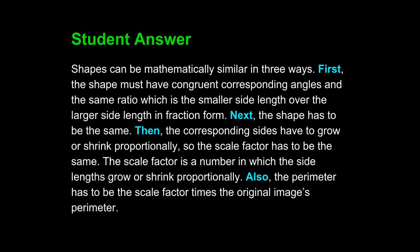Next, the shape has to be the same. Then, the corresponding sides have to grow or shrink proportionally, so the scale factor has to be the same. The scale factor is a number in which the side lengths grow or shrink proportionally. Also, the perimeter has to be the scale factor times the original image's perimeter.